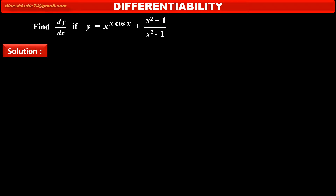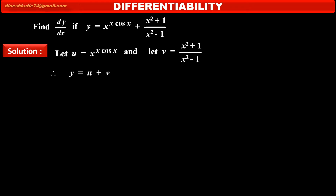This given function has two terms. The first one is x raised to x cos x, and the second one is x square plus 1 upon x square minus 1. In the first term, both the base and index contain variables. So we split: let u equal the first term x raised to x cos x, and let v equal the second term x square plus 1 upon x square minus 1. Therefore, y equals u plus v.